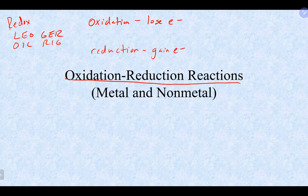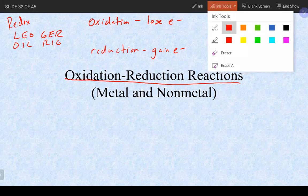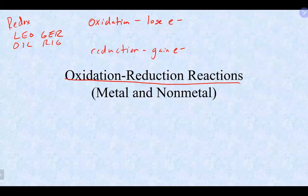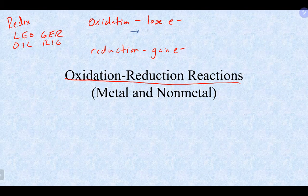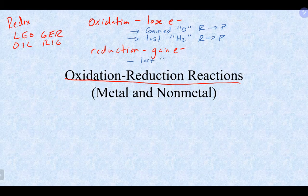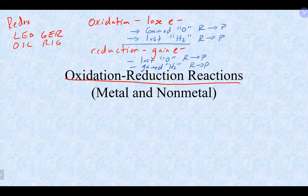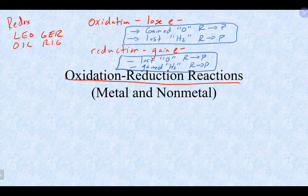There are other definitions of oxidation and reduction used more in organic chemistry. Oxidation can also mean gaining oxygen or losing hydrogen as you go from reactants to products. Reduction means losing oxygen or gaining hydrogen going from reactants to products. In general chemistry, with lots of metals, we mostly look at losing or gaining electrons.